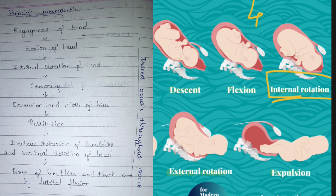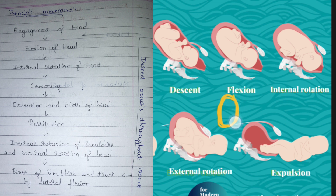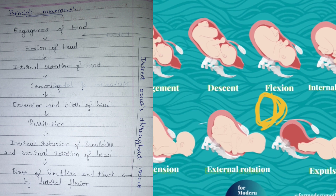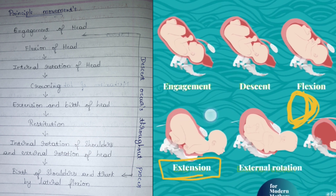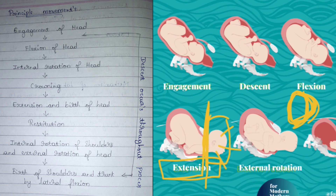After internal rotation, the next step is crowning — which is not shown in the diagram here. Crowning is when the fetus head becomes visible from outside the vagina. After crowning comes extension. You can see the mother's body here, and the fetus head has come out — this is known as extension, or the birth of the head. In this stage, the forehead, face, and chin are swept out from the mother's womb.